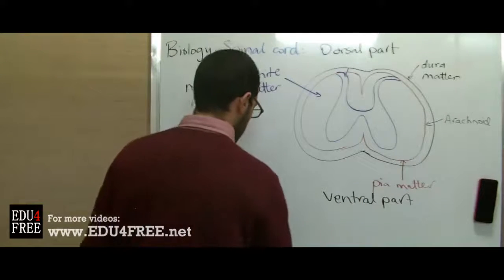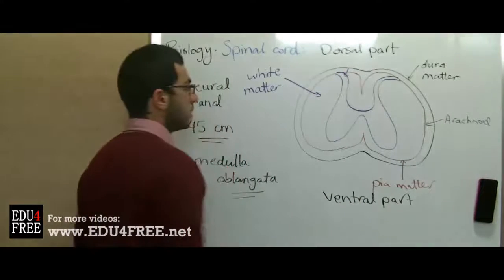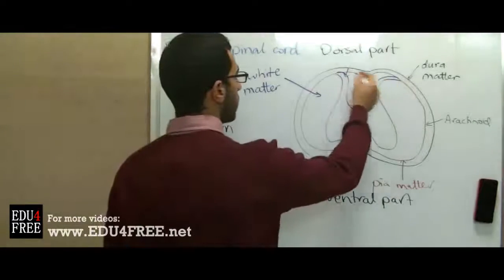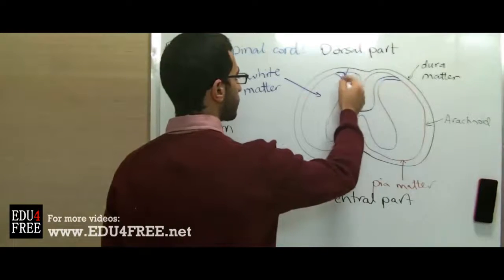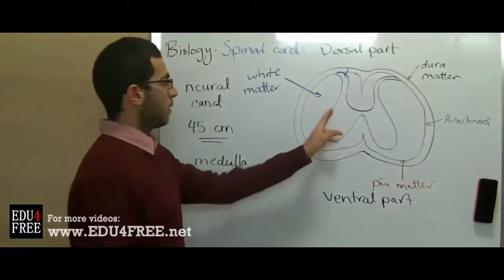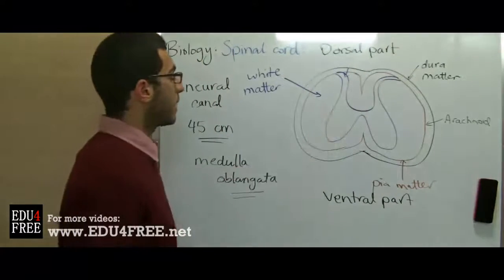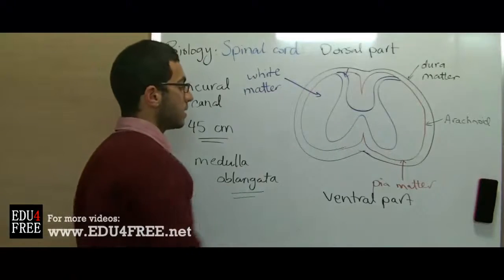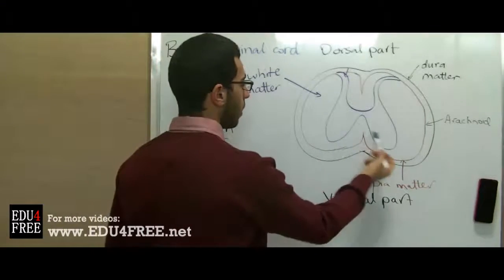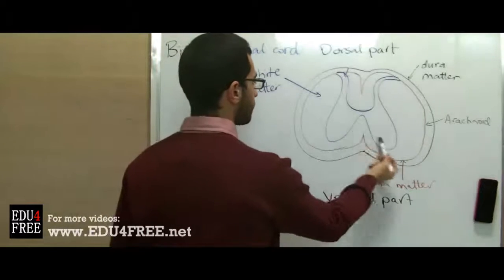We have two dorsal horns in the gray matter and two ventral horns.